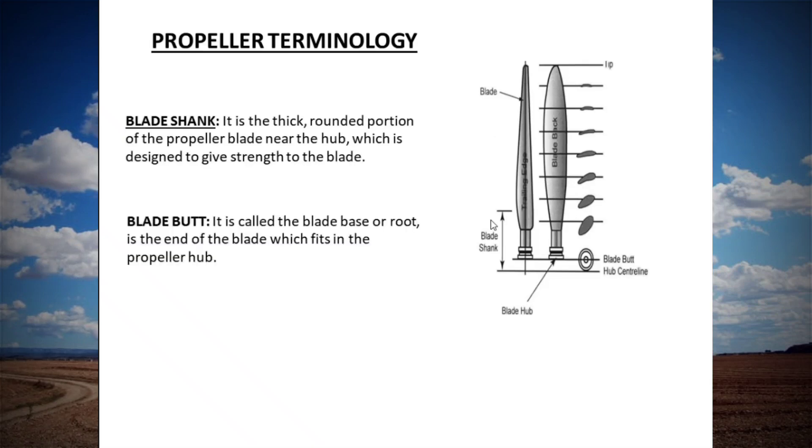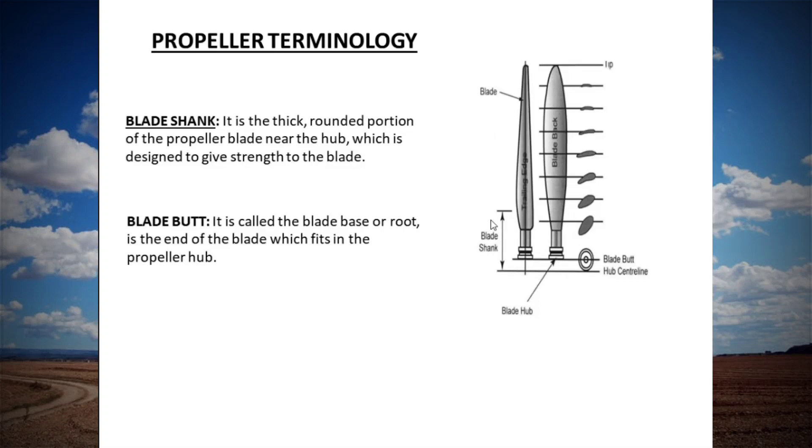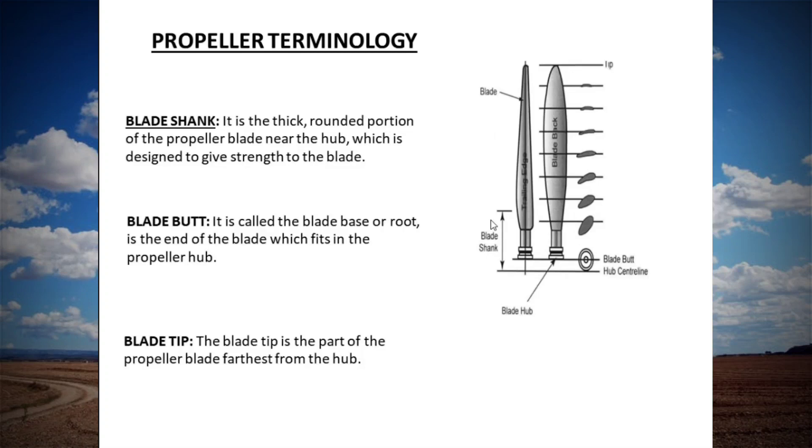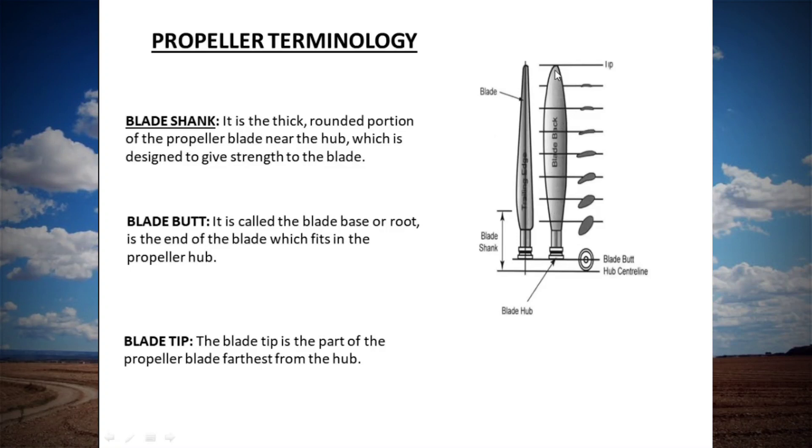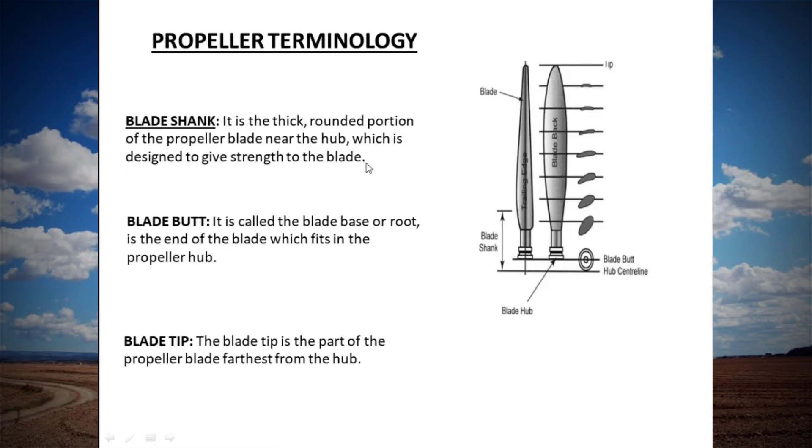Blade butt: blade butt is the base and root of the propeller. Blade tip: blade tip is the outward end of the propeller blade. At tip portion the blade travels with many times higher speed. It is due to the low blade angle. So actually the blade angle and rotation both are inversely proportional to each other.